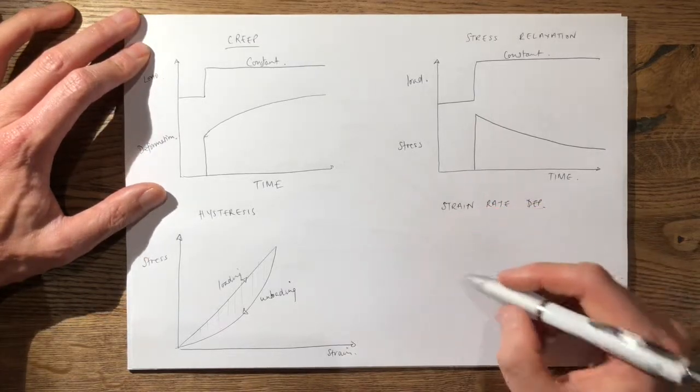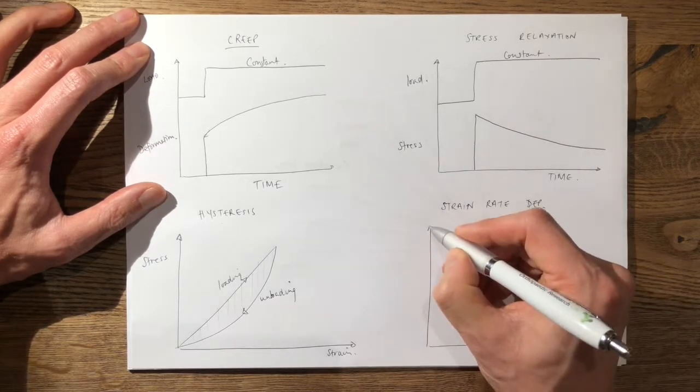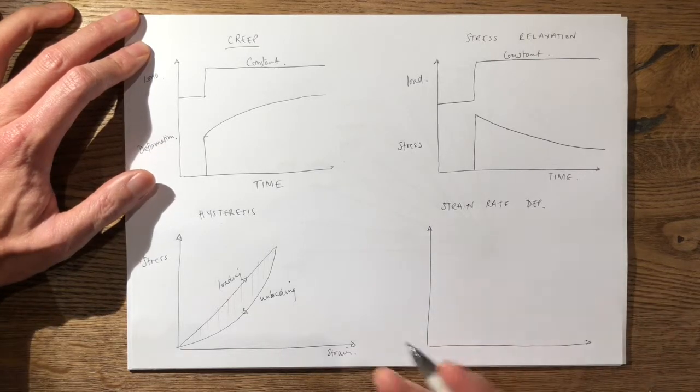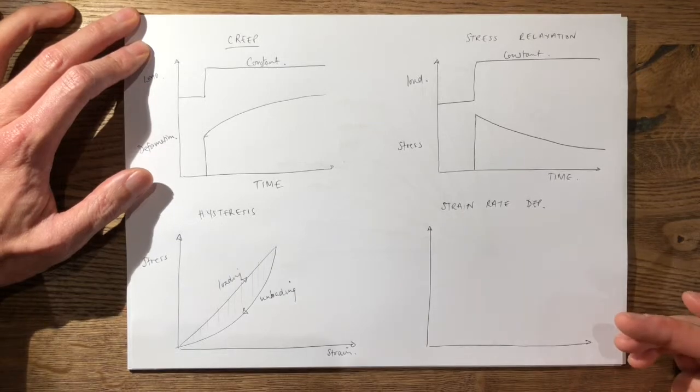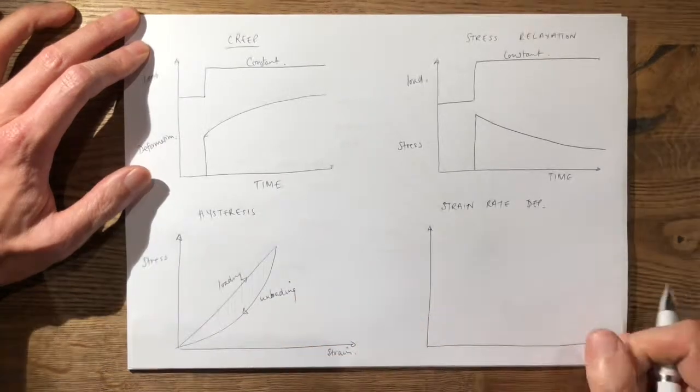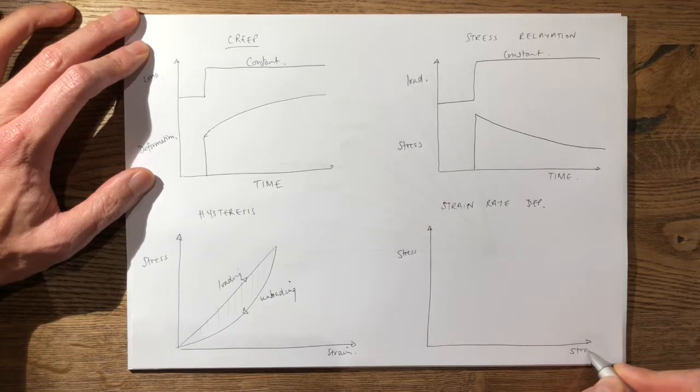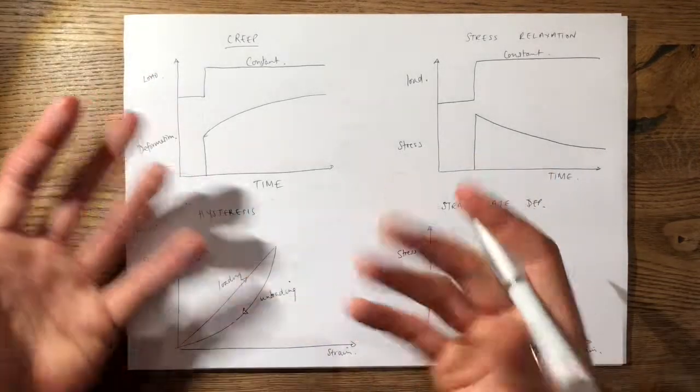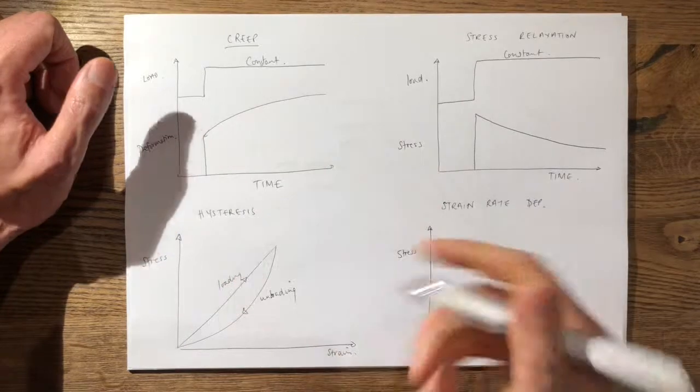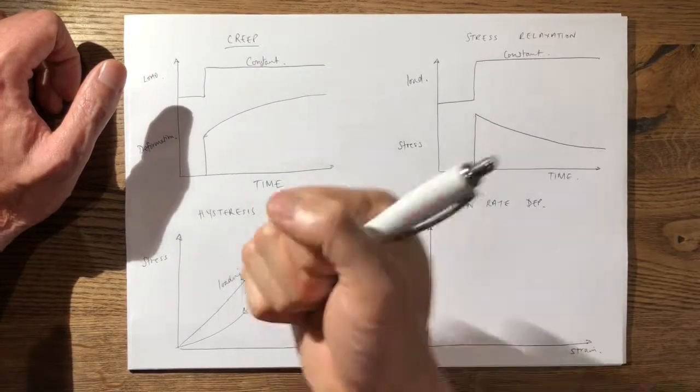The last thing I want to draw is strain rate dependency. Now this is defined as the material having a different stiffness or a different strain depending on the rate of the load application or the rate of the stress application. The example I use here is imagine you have some plasticine and you punch it and you load it very quickly as your fist hits the plasticine.